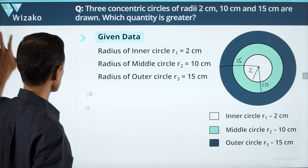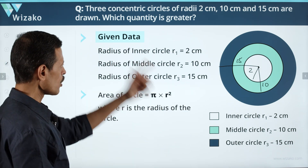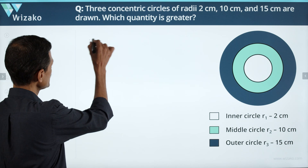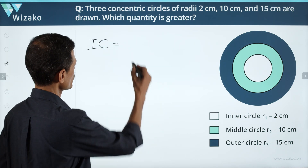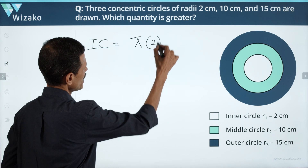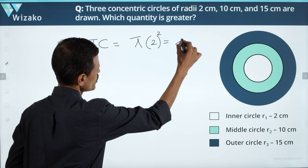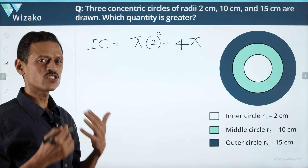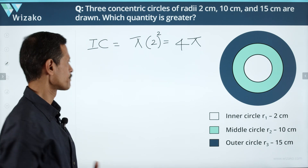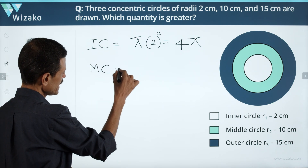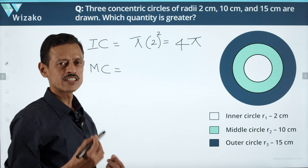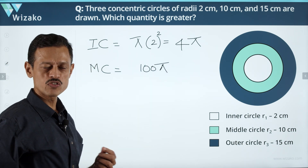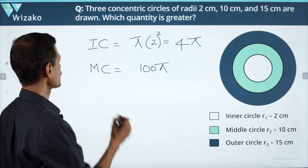The area of a circle equals π r². For the inner circle, area = π × 2² = 4π. For the middle circle, radius is 10, so area = π × 10² = 100π. For the outer circle, radius is 15, so area = π × 15² = 225π. We now have the areas of all three circles.